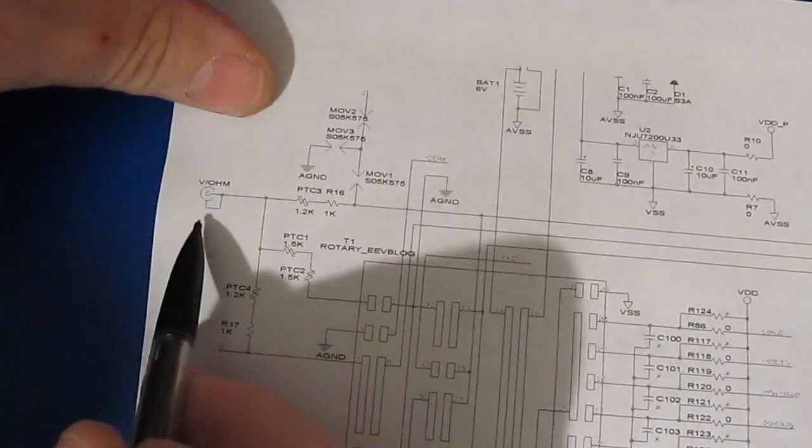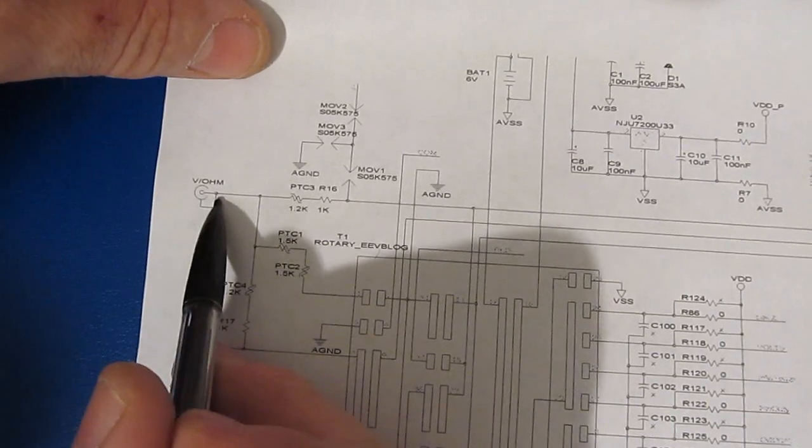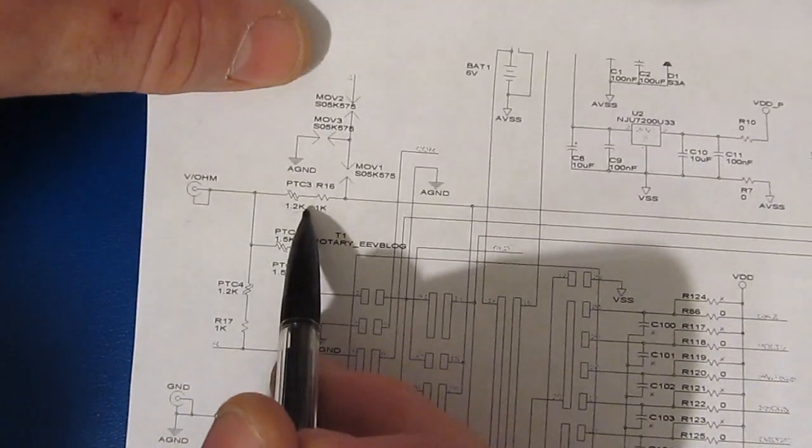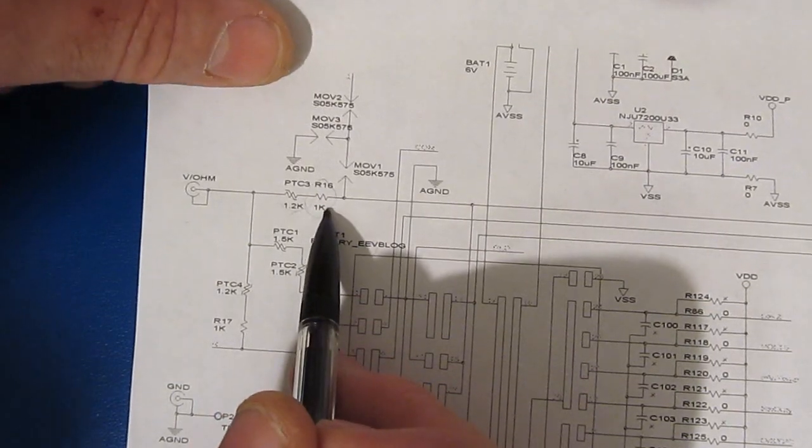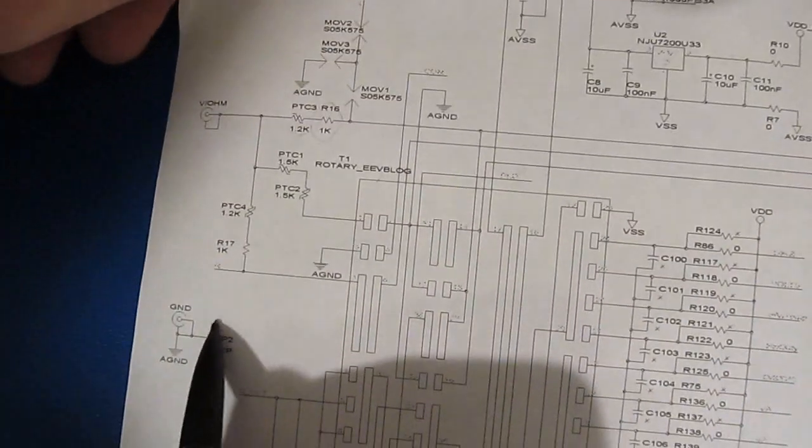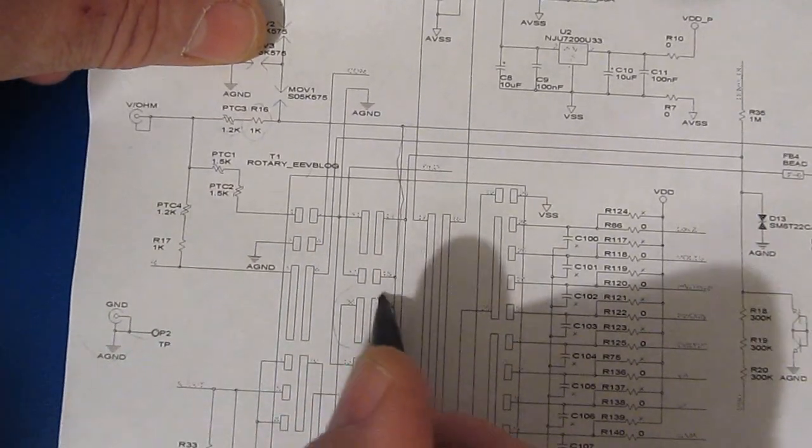This is looking at the latest schematic for the 121 GW, and this is our volt ohm input. This is one of the PTCs that Dave's mentioning, and that's in series with a 1k ohm resistor. And then we have two MOVs in series going back to the ground or the common input, and these are the two contacts in question that were actually burned.